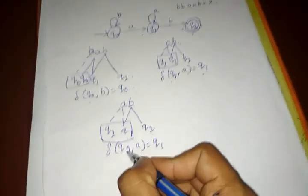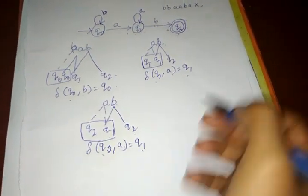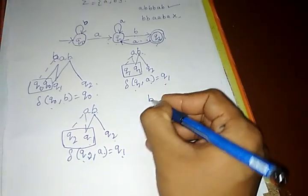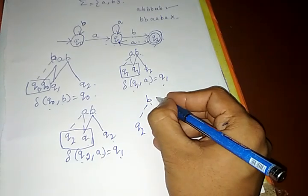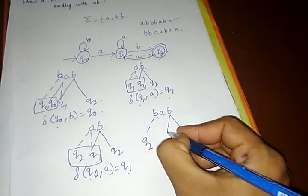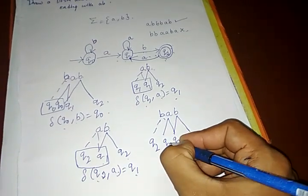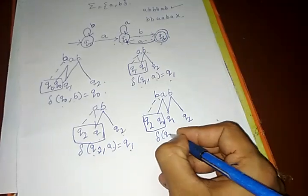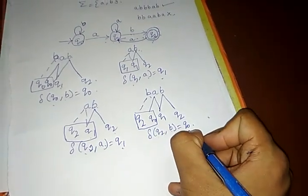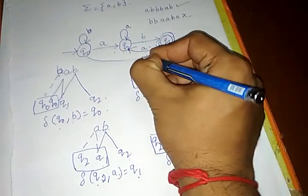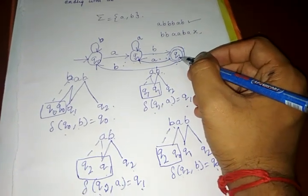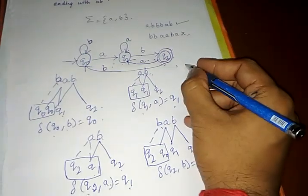On giving 'a' as input to Q2 it reaches Q1. To define 'b' on Q2: since the string must end with 'b', following the same logic Q2 → Q1 → Q0, we write δ(Q2, b) = Q0 — on giving input 'b' to Q2 it goes to Q0. This completes the DFSM where in each state all alphabets are defined. Now let us write a transition table for the same.